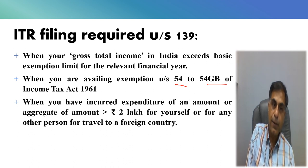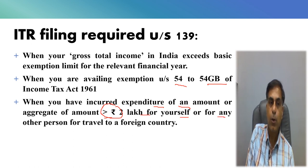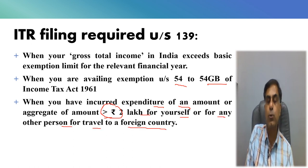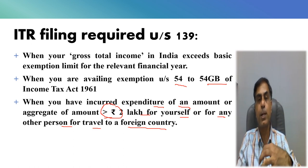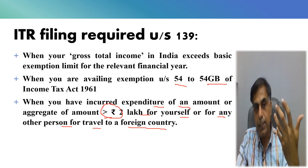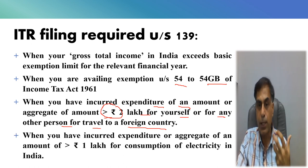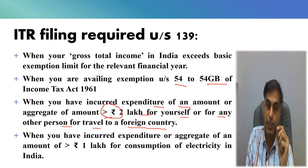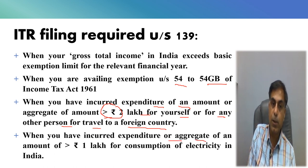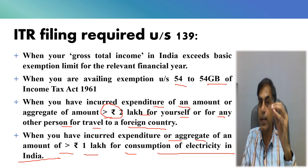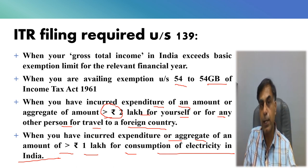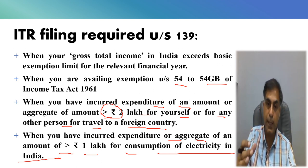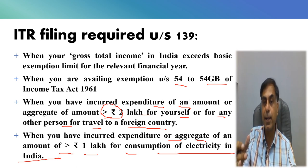Another criteria: when you have incurred expenditure of an amount or aggregate amount greater than 2 lakh rupees for yourself or for any other person for travel to a foreign country — say from your NRO account you have spent more than 2 lakh rupees for sponsoring someone or for yourself for travel to a foreign country — you are liable to file mandatory ITR in India. This condition is applicable for NRIs as well as other persons. Similarly, when you have incurred expenditure of an amount greater than 1 lakh for consumption of electricity in India, you are also liable to file ITR in India. These are important criteria to determine whether as an NRI you are liable to file ITR in India.